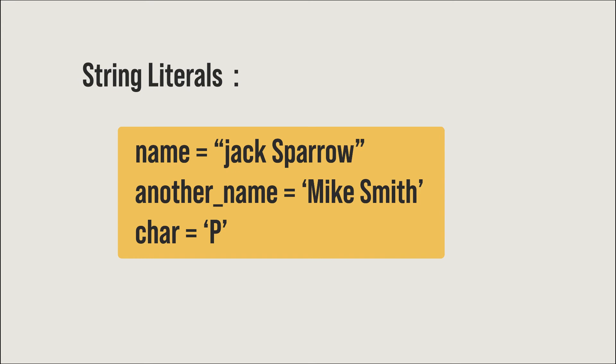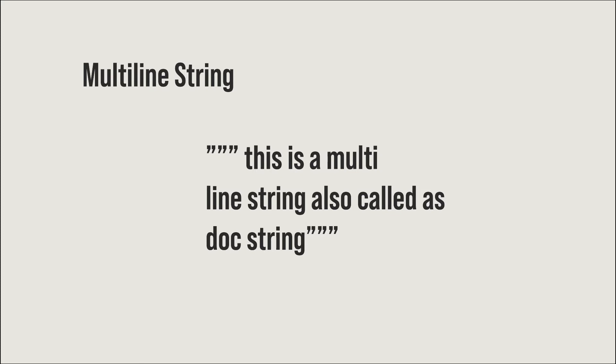Moving on to string literals — in Python you can write a string in double quotes or single quotes. For example, name equals 'Jack Sparrow' in double quotes, or another_name equals 'Mike Smith' in single quotes. To store a single character, assign a single alphabet letter to a variable. For a multi-line string, use triple quotes (single or double) to enclose your text including newlines. This is also used as a multi-line comment and is called a docstring.